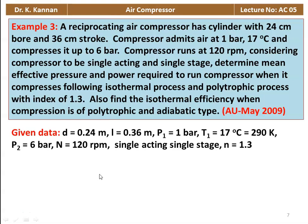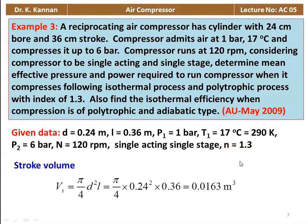Given data: diameter = 0.24 m, stroke length = 0.36 m, inlet pressure P1 = 1 bar, inlet temperature T1 = 70°C = 343 K, delivery pressure P2 = 6 bar, speed = 120 RPM, polytropic index n = 1.3. Stroke volume Vs = (π/4) × 0.24² × 0.36 = 0.0163 m³.